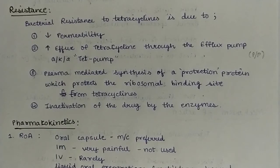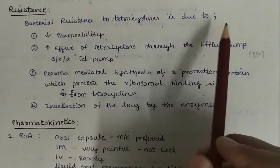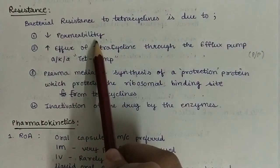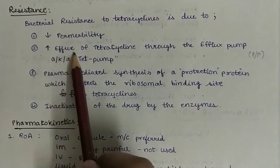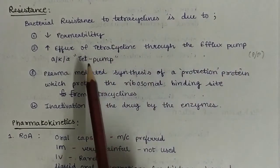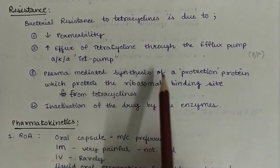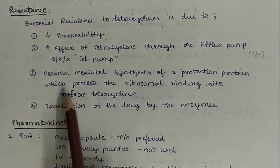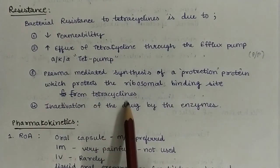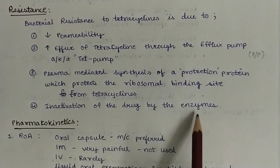Next, resistance. The bacterial resistance to tetracyclines is due to: first, decreased permeability to tetracycline; second, increased efflux of tetracycline through the efflux pump, also known as the TET pumps; third, plasmid-mediated synthesis of a protection protein which protects the ribosomal binding site from tetracyclines; fourth, inactivation of the drug by enzymes.